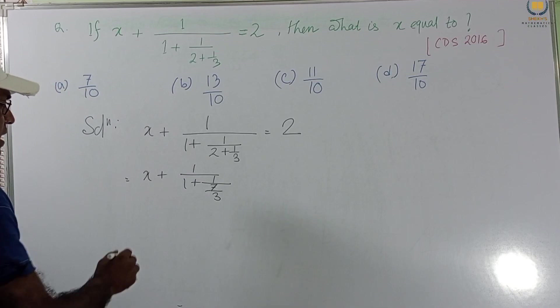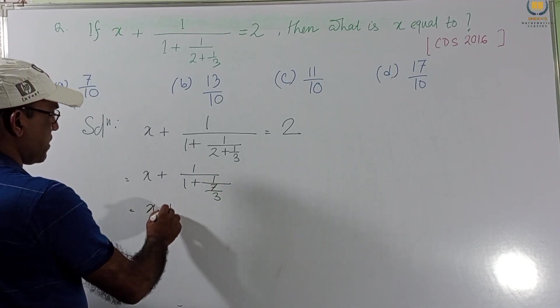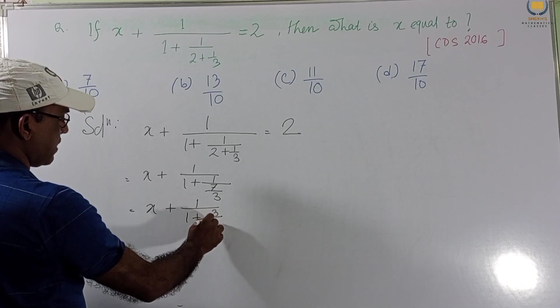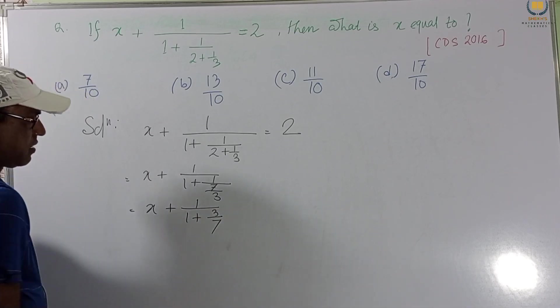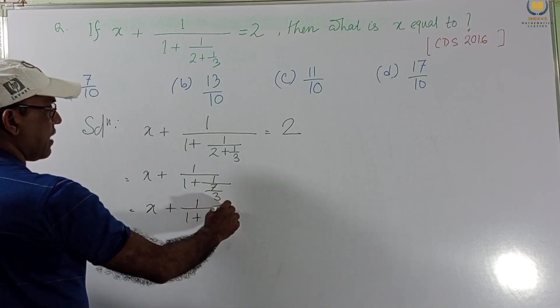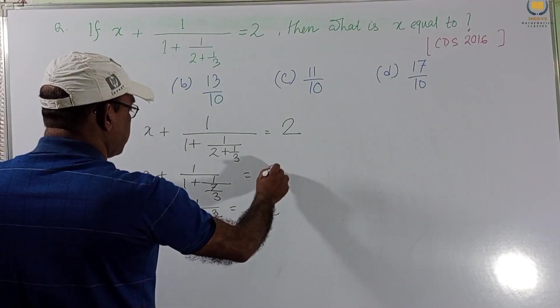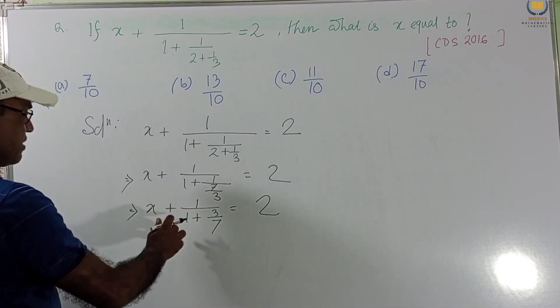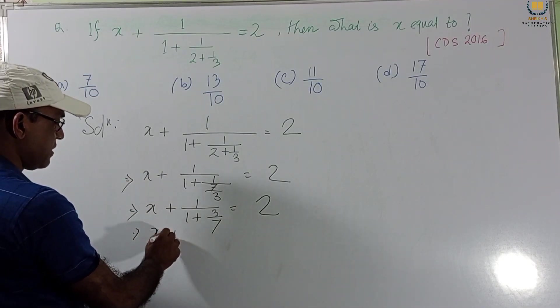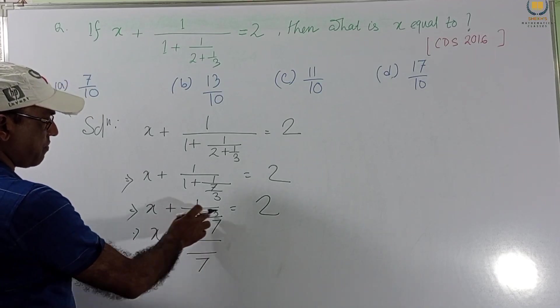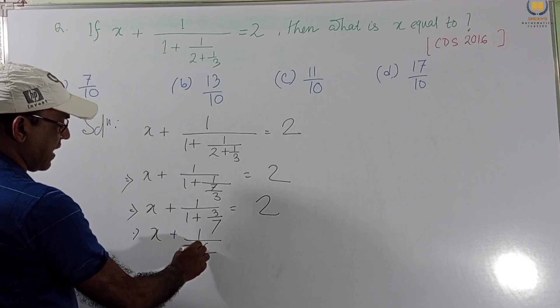Now this is X plus 1 by this equal to 2 given. 1 by 1 by 1 plus 1 by 1 plus 3 by 7. Taking LCM of this, X, 1 by 7 is LCM. 7, 1 is 7 plus 3, 10.